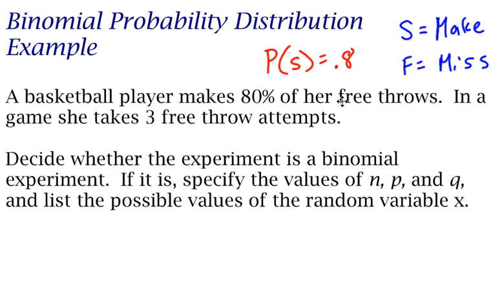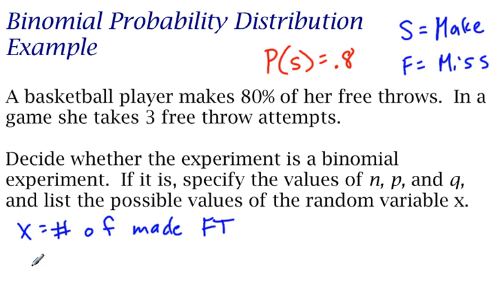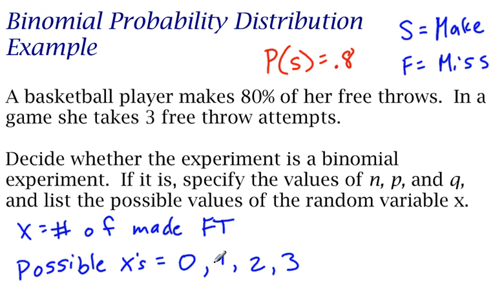The last condition is that the random variable X counts the number of successful trials. We have to define what X is first. X is the number of made free throws. So all the possible values of X would be 0 — she can make none of the 3 — 1, 2, or 3. She can make none of her 3 shots, 1 out of the 3, 2 out of the 3, or all 3 shots.